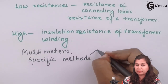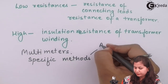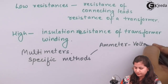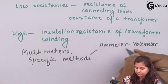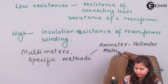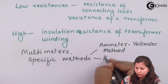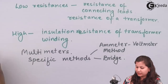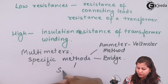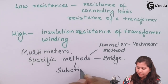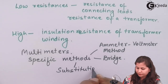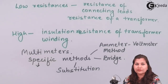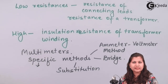These specific methods include the ammeter-voltmeter method. Bridge networks are also used for the measurement of resistances. Other methods include the substitution method, the fall of potential method, and the loss of charge method.